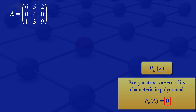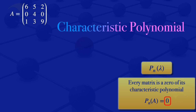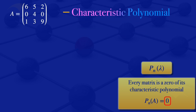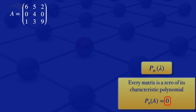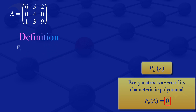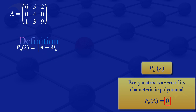What we have to do is find the characteristic polynomial of this matrix and then substitute the matrix A into it. By definition, the characteristic polynomial is the determinant of A minus lambda times I_n.